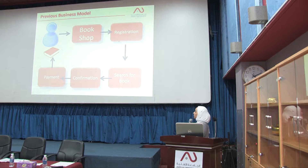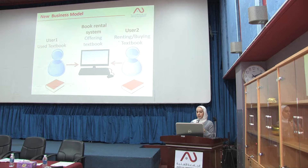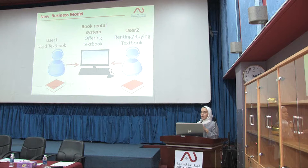As we can see here, in the previous business model, we have multiple processes to be done: going to a bookshop, registration, searching for a book, confirmation, and payment — and at the end the user gets the book. In the new business model, all these processes are done through the system anytime, anywhere, which is much better than the previous one.